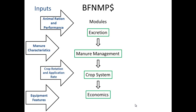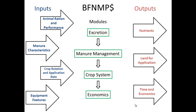The second module is manure management — you're asked questions about the manure characteristics coming off your farm: dry matter, ash contamination, things like that. The third module is the cropping system you're utilizing: what type of crops you're growing, what rotation you're using, yields you expect, and application rate of that manure. The fourth and final module is economics — you put in what equipment you're using, fuel costs, labor costs, and so on. The final output shows how many nutrients are in your manure, how much land you need to apply that manure to, how much time it takes, and the economics that go with it.